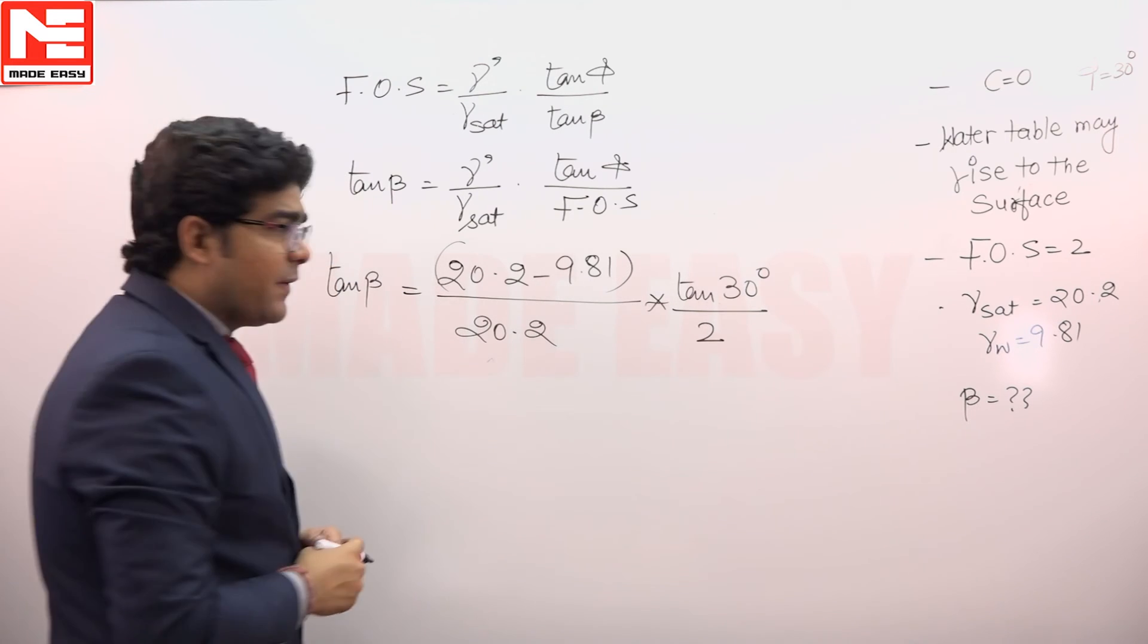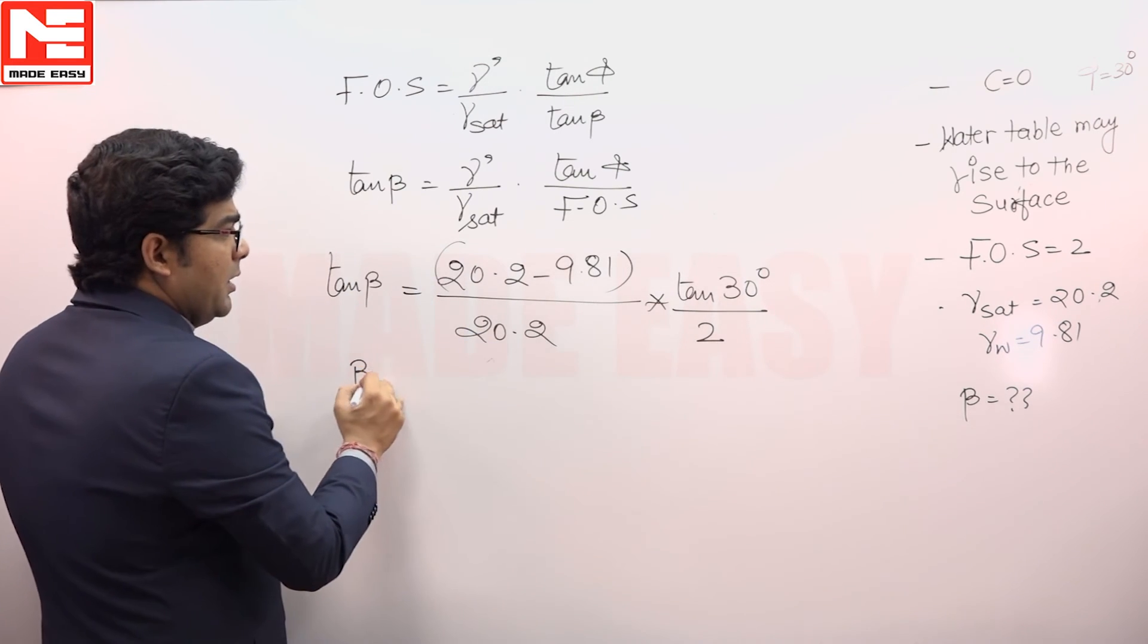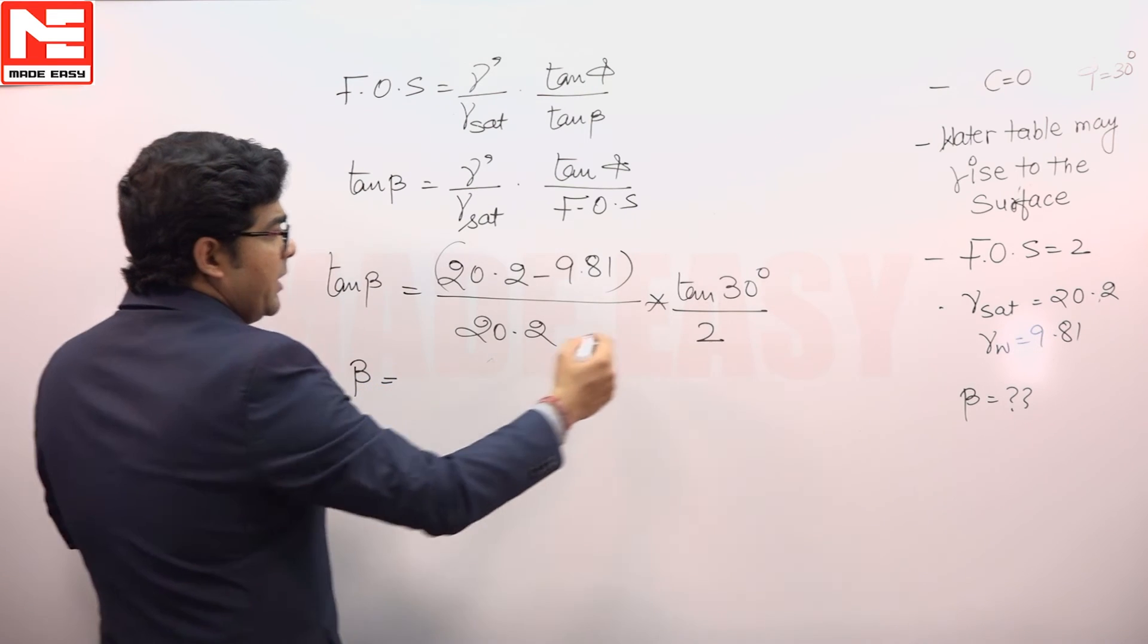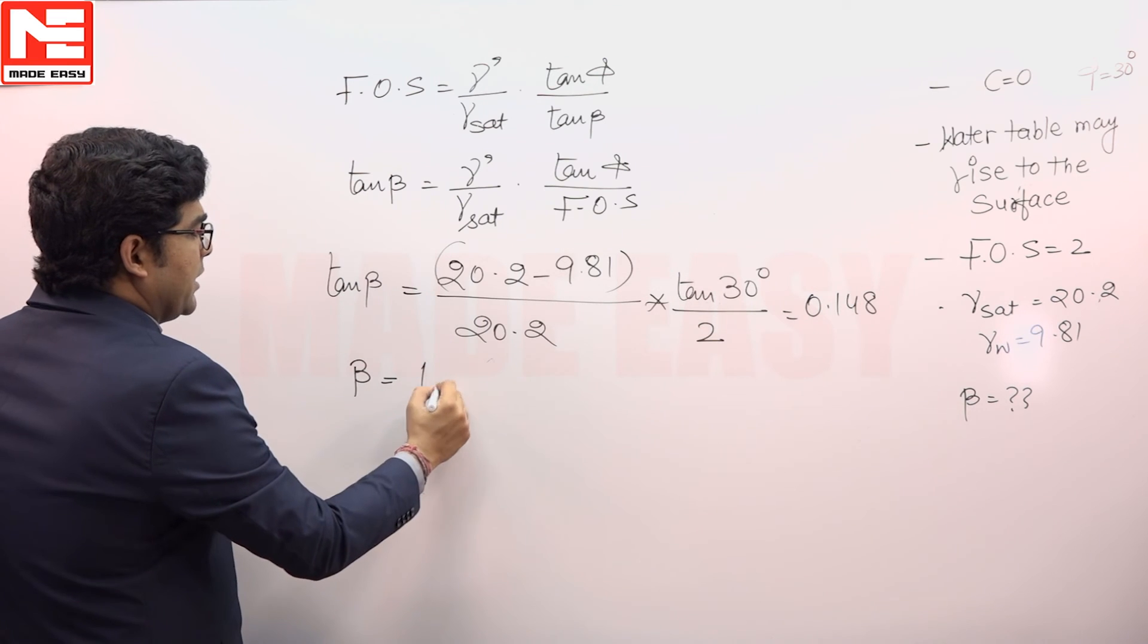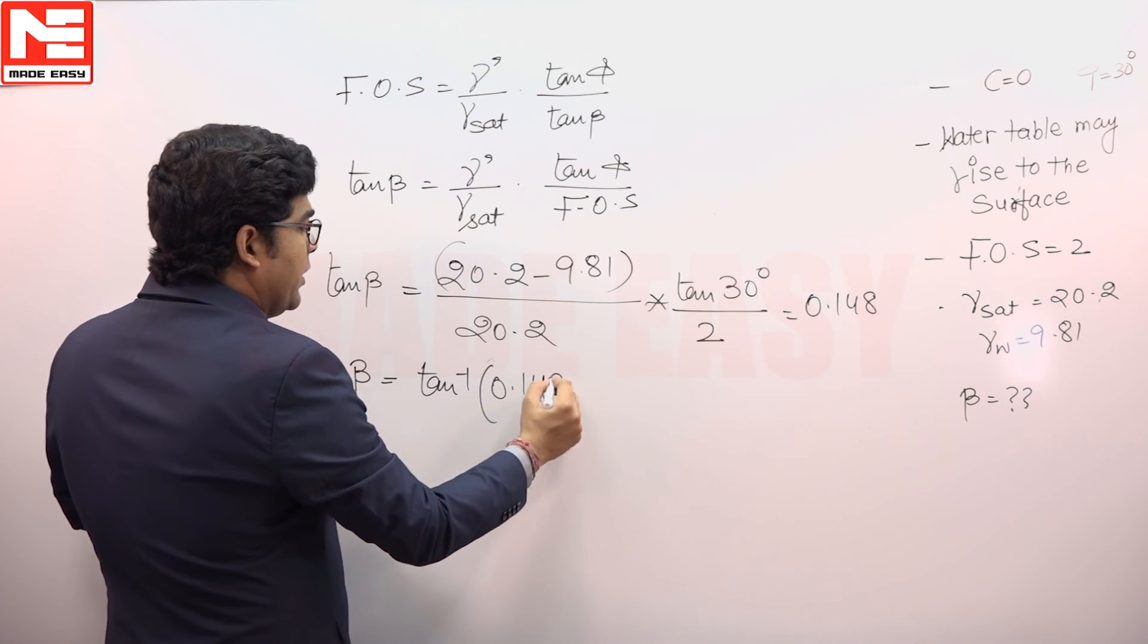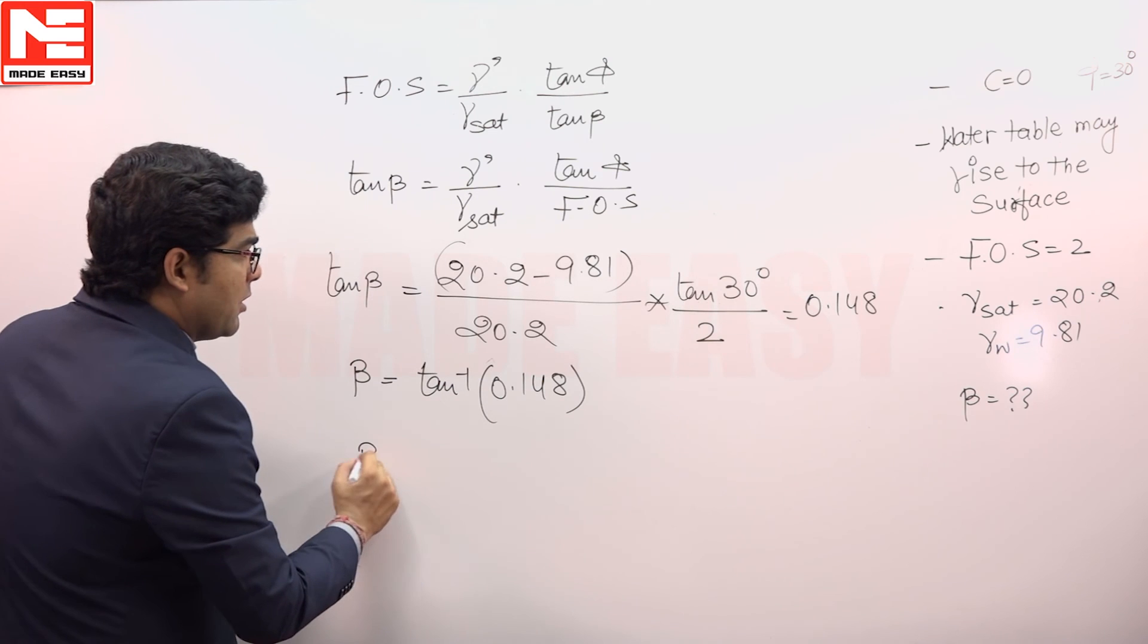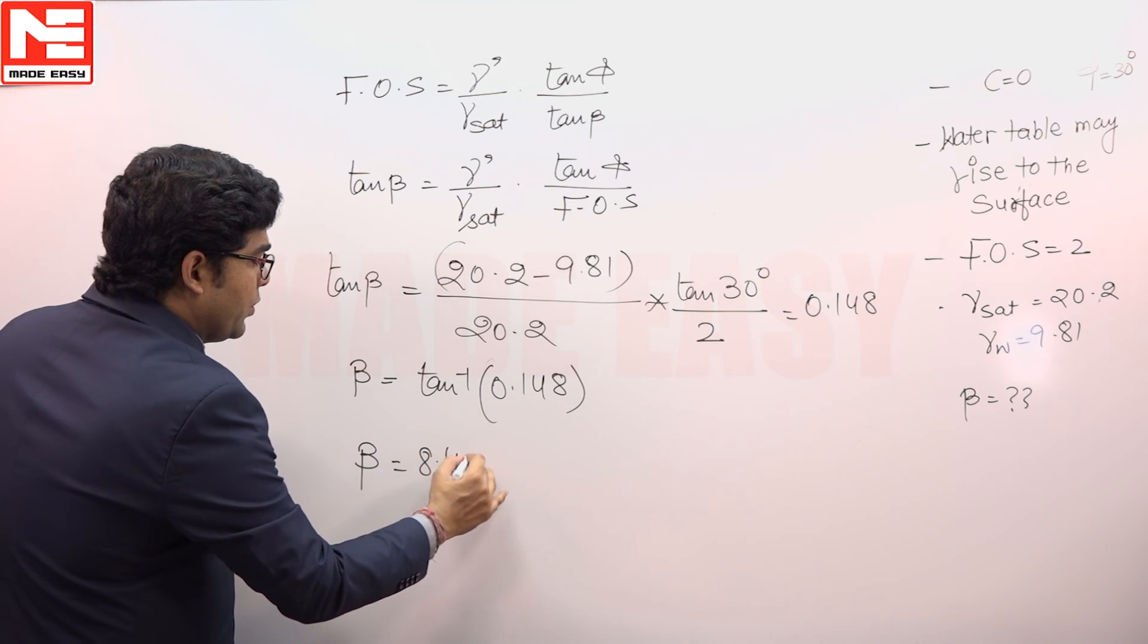When we solve this expression, tan beta will be equivalent to 0.148, and when we consider this beta, it will be tan inverse 0.148, and that comes out to be 8.42 degrees. So the answer is 8.42 degrees.